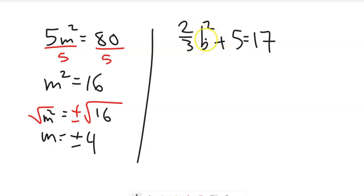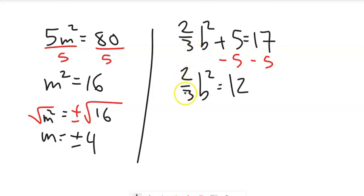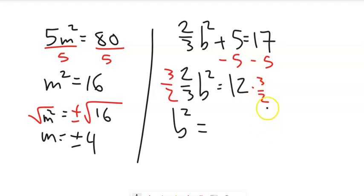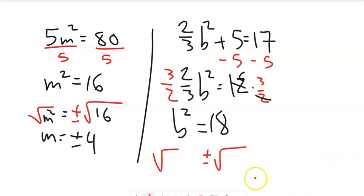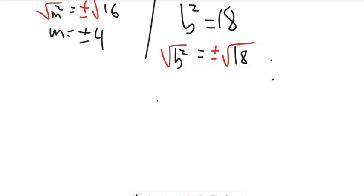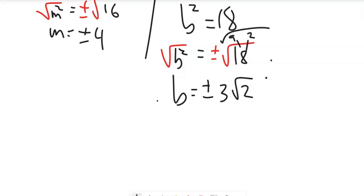Let's solve this next one. Before I can square root, I want to get the squared term all alone. B is squared here, so let's subtract 5 from both sides. Now I have 2 thirds B squared, so I'll multiply both sides by 3 halves. On the left, 2 thirds times 3 halves becomes 1, giving me B squared. On the right, half of 12 is 6, and 6 times 3 is 18. So B squared equals 18. Square rooting both sides with plus or minus, and since 18 is 9 times 2, B equals plus or minus 3 root 2.